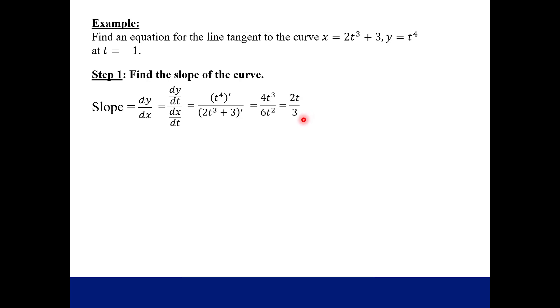Now we were told to find this tangent line at a specific point, a specific t value. So we need to get a number. Notice right now this is still actually a formula for our slope. So now we plug in our number which is negative 1. So evaluate the derivative at t equals negative 1, and we get that our slope of our curve is going to be negative 2 thirds.